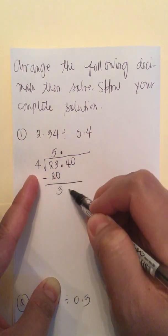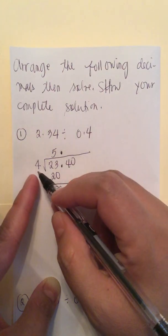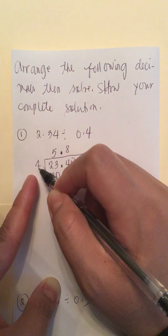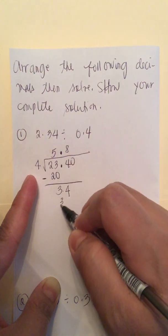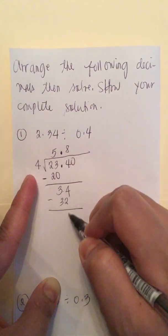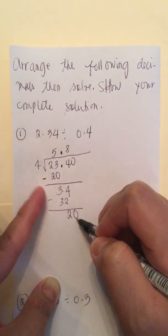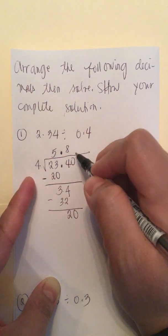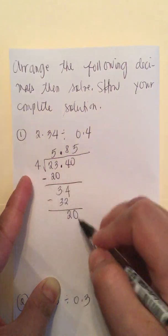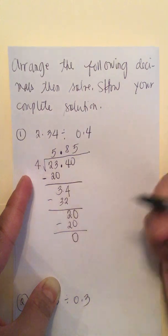We bring down the 4, so 34 divided by 4 is 8, 8 times 4 is 32, then we subtract: 34 minus 32 is 2. We bring down 0, so 20 divided by 4 is 5, 5 times 4 is 20, and this is 0.